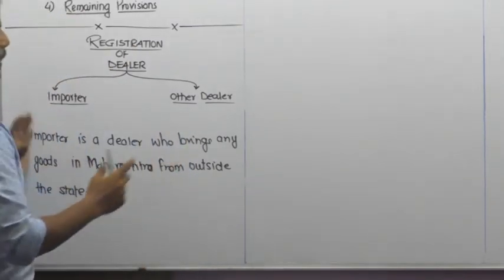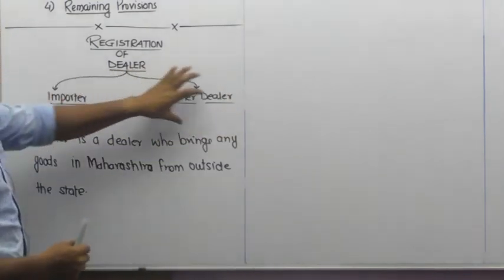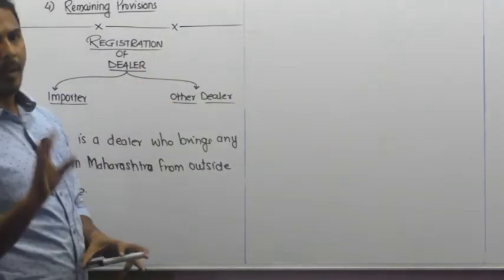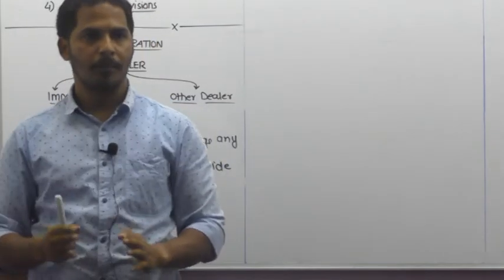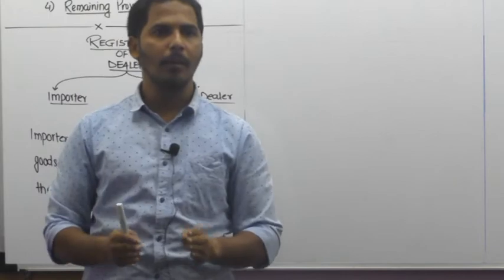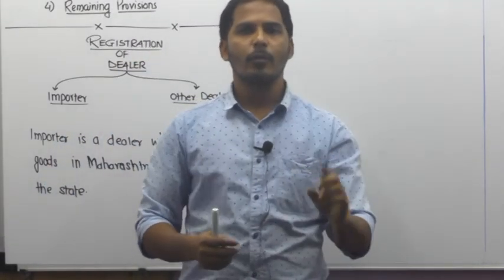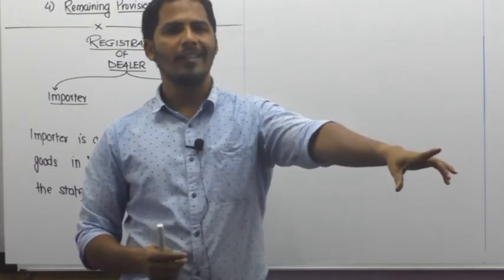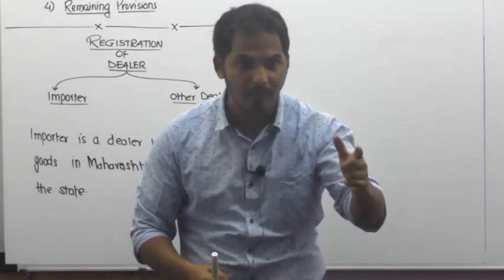After categorizing into two types, the government set a limit for each category. If an importer crosses that limit, registration becomes compulsory and payment of tax must begin under MVAT Act 2002. Similarly, a separate limit is set for other dealers.